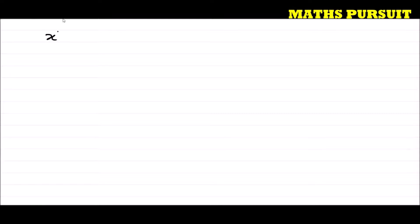The question has given us three polynomials: one is x³ + 3x² + 5x + 6, and the other two polynomials are 2x + 4 and x + 2.